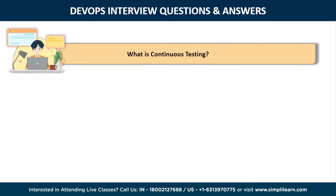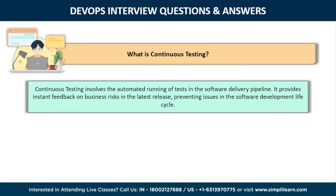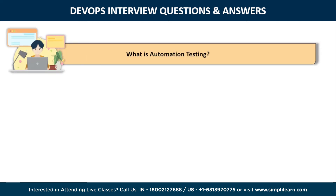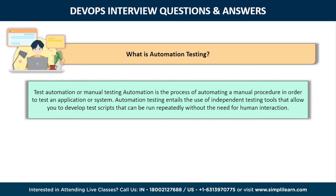Next is: what is continuous testing? Continuous testing constitutes the running of automated tests as part of the software delivery pipeline to provide instant feedback on the business risk present in the most recent release, in order to prevent problems in the software delivery lifecycle and allow development teams to receive immediate feedback. Every build is continually tested in this manner. This results in a significant increase in speed and developer productivity, as it eliminates the requirement to re-run all tests after each update and project rebuild.